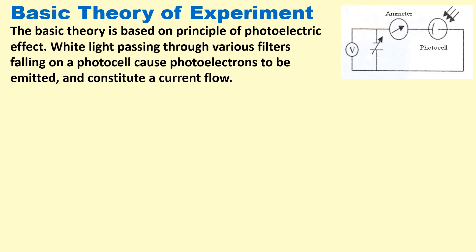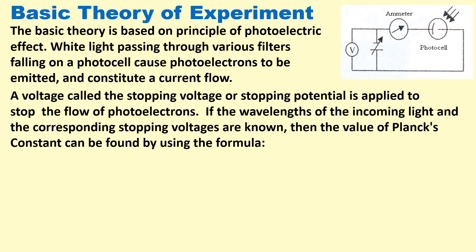The basic theory is based on the principle of photoelectric effect. When white light passing through various filters falls on the photocell, it causes photoelectrons to be emitted and constitutes a current flow. A voltage called the stopping voltage or stopping potential is applied to stop the flow of photoelectrons.